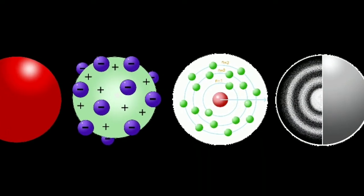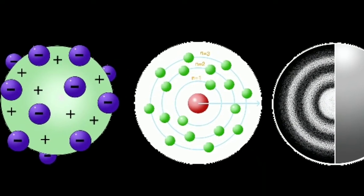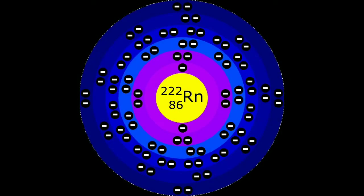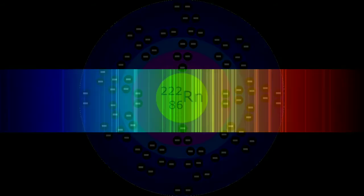The Bohr model of the atom was the first complete physical model of the atom. It described the overall structure of the atom, how atoms bond to each other, and predicted the spectral lines of hydrogen.